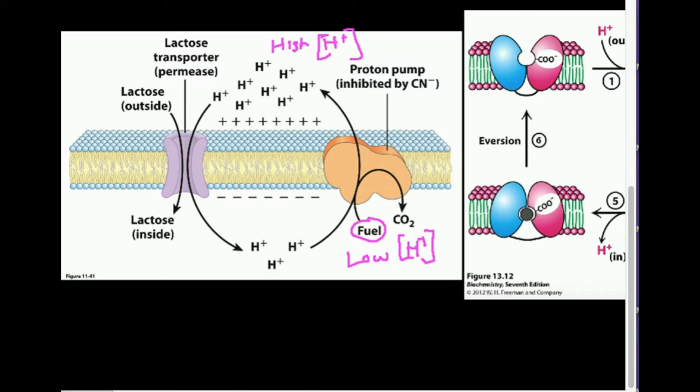So what does the lactose transporter do on a very general scale? Well, we have all these protons out here. The concentration gradient is maintained by pumping them out here to the outside. And what's essentially going to happen is we're going to have a type of symport. Recall that symport is a type of co-transport in which two things move across the membrane in the same direction.